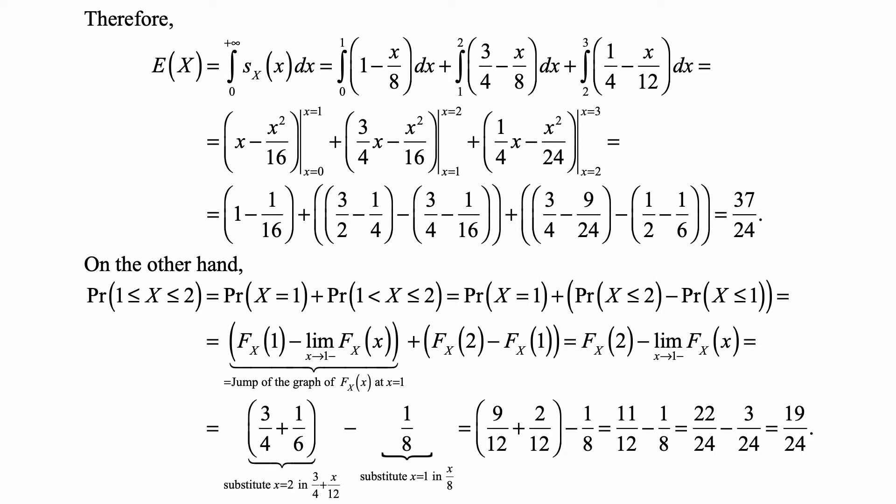And that's equal to x minus x squared over 16 evaluated from 0 to 1, plus 3/4 x minus x squared over 16 evaluated from 1 to 2, plus 1/4 x minus x squared over 24 evaluated from 2 to 3. So that's 1 minus 1/16 plus 3/2 minus 1/4 minus the quantity 3/4 minus 1/16, plus 3/4 minus 9/24 minus 1/2 minus 1/6, and then we evaluate all of it to be equal to 37 over 24. So that's the expected value of X.